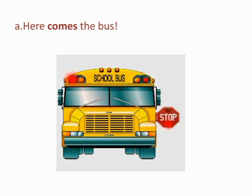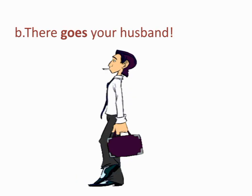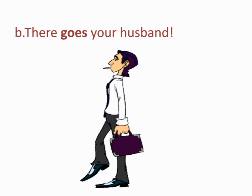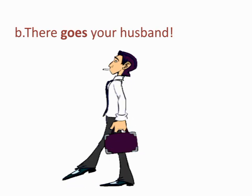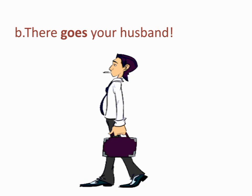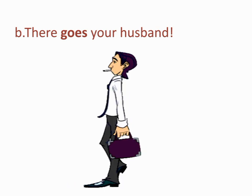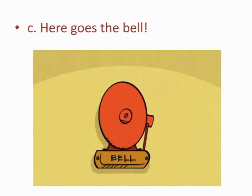For example: 'Here comes the bus.' Instead of using the present continuous tense — 'The bus is coming' — you can use the simple present tense: 'Here comes the bus.' Another example: 'There goes your husband.' The action is going on right now. 'Here goes the bell.'